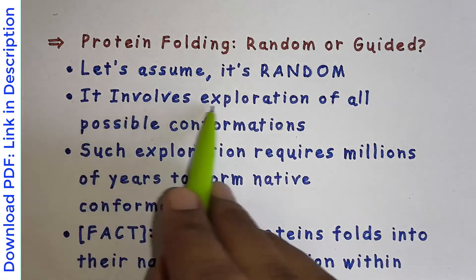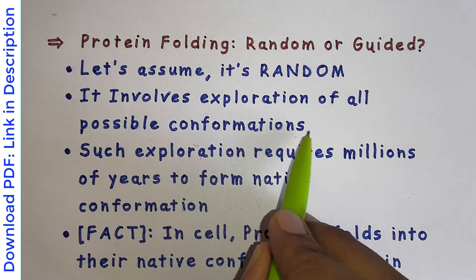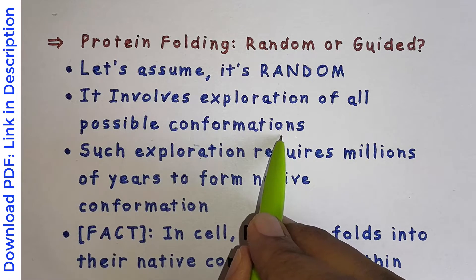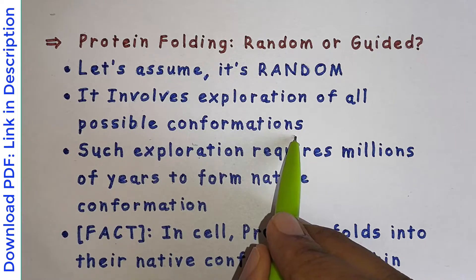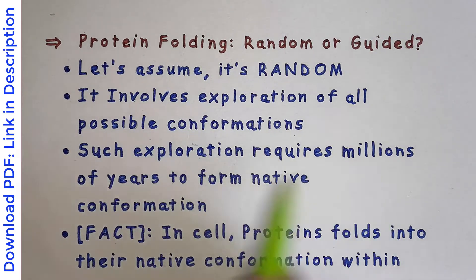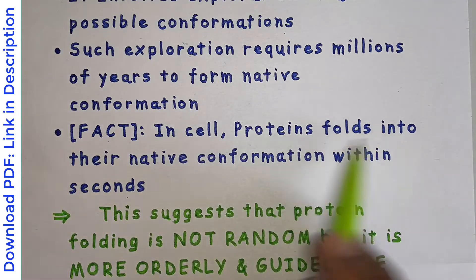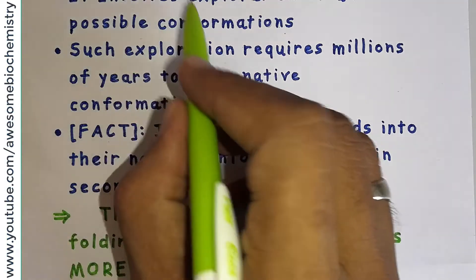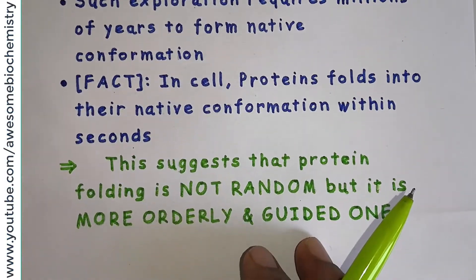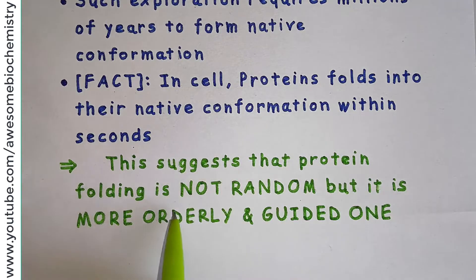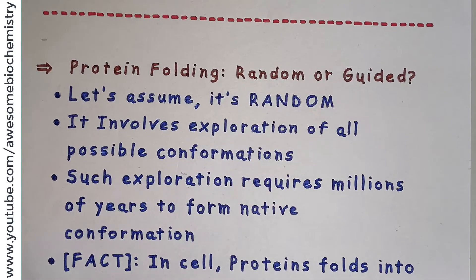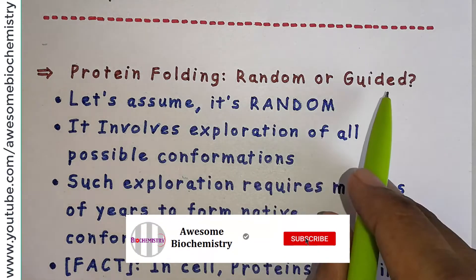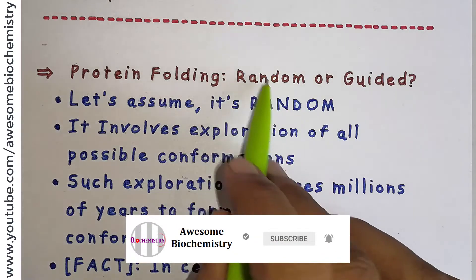If folding were really random, it would involve exploration of all possible conformations — millions of them even for a small polypeptide — requiring millions of years to reach the native conformation. But inside the cell, proteins fold into their native conformation within seconds. This practical aspect does not match the theoretical random model, which suggests that protein folding is not random but is more orderly and guided. So protein folding is a guided process, not a random process.